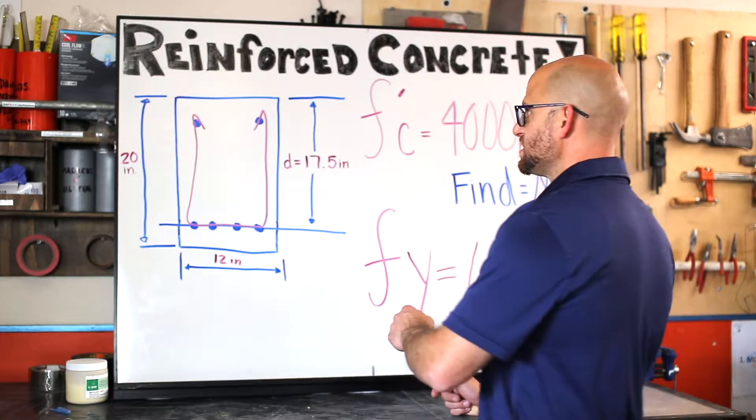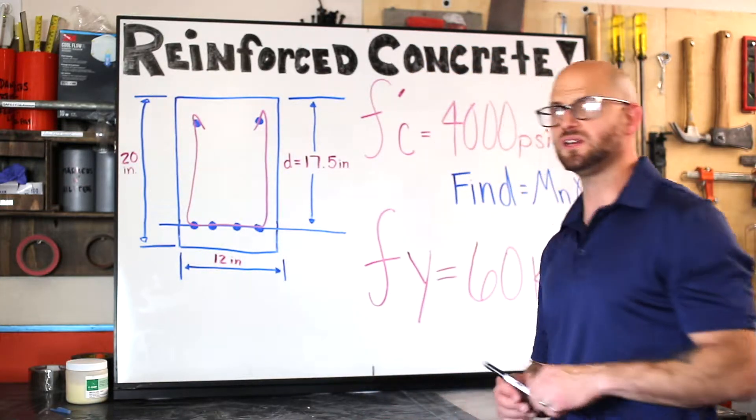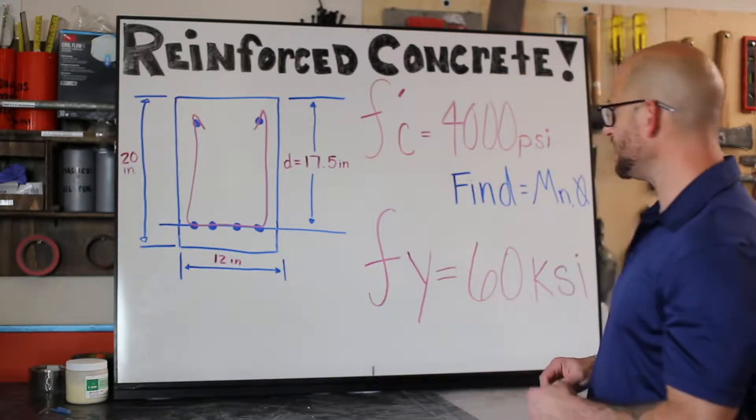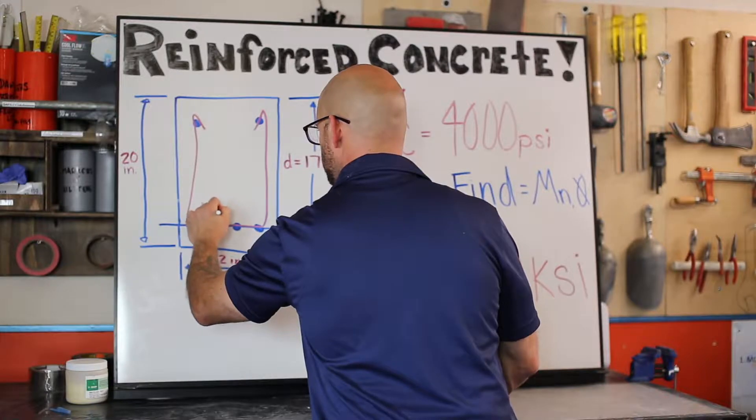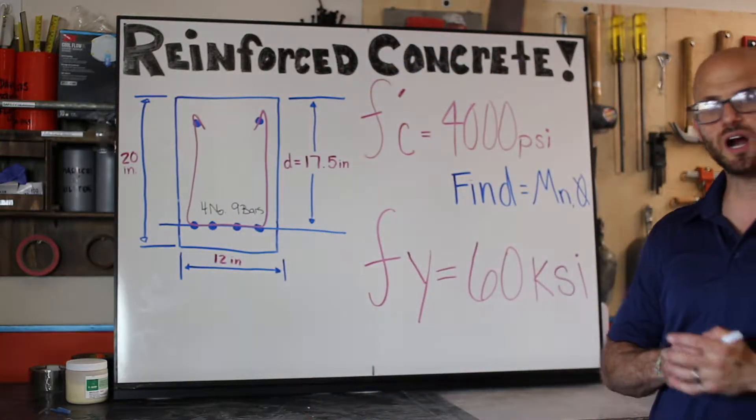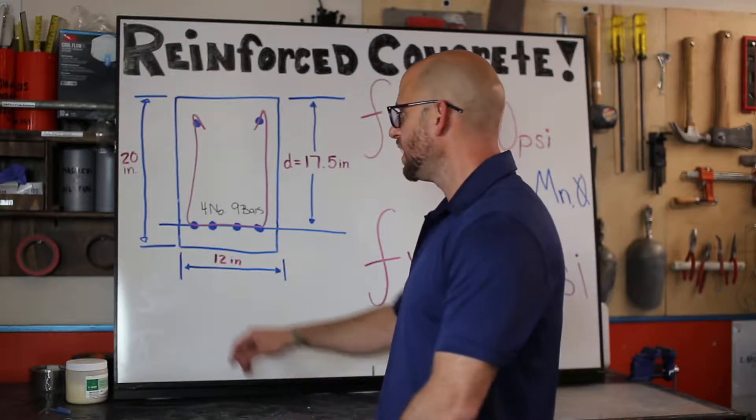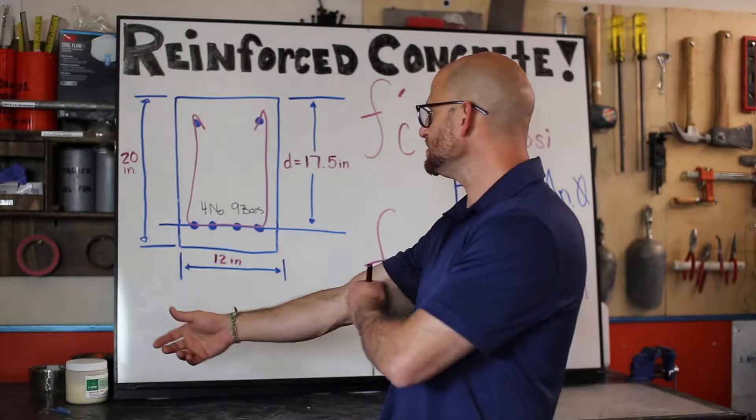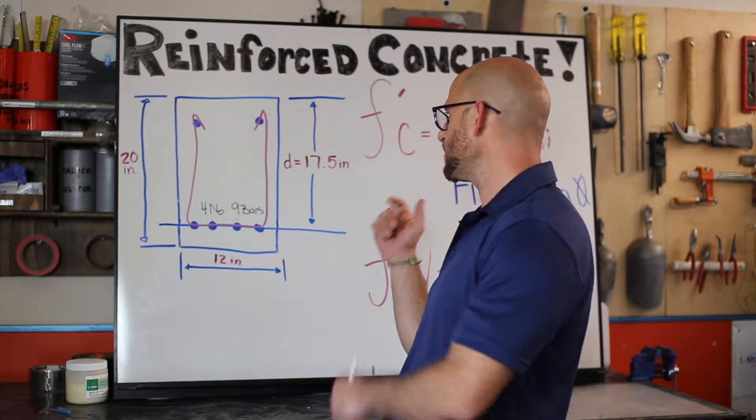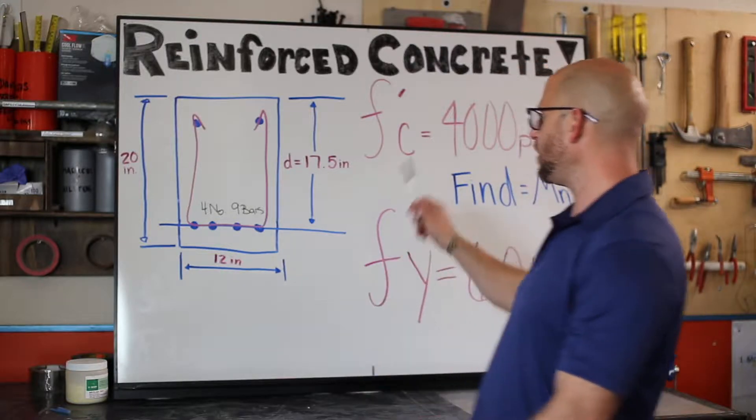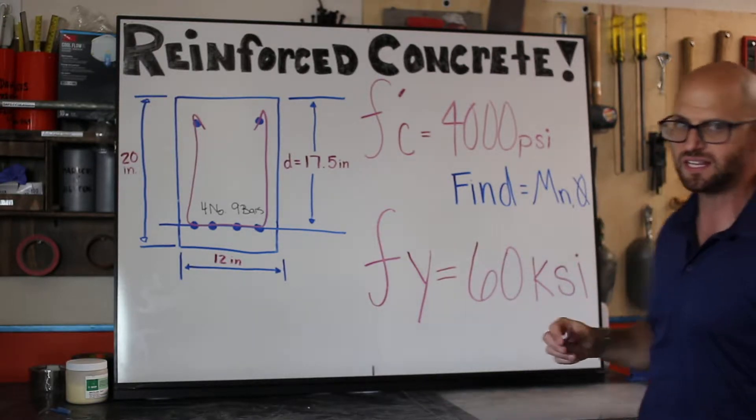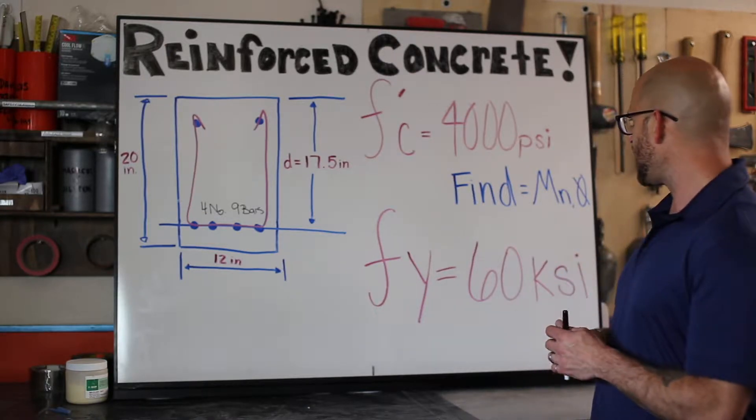We have a single reinforced concrete beam problem. This represents our rectangular reinforced concrete beam with four number nine bars. It's a 12 inch base, total height of 20 inches, and from the middle of the reinforcement layer to the extreme concrete fiber we've got 17.5 inches. We have ultimate strength f'c = 4,000 psi and yield strength of steel fy = 60,000 psi. Our job is to find the nominal moment strength and capacity as well as the strength reduction factor.